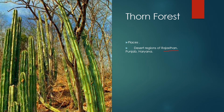Rajasthan is a desert area in India, and desert areas are also found in Punjab and Haryana — such kinds of trees are found there. Here I have taken a picture of a Nagfani plant. The green part is the stem, not the leaf, and the spines you can see are the modified leaves.